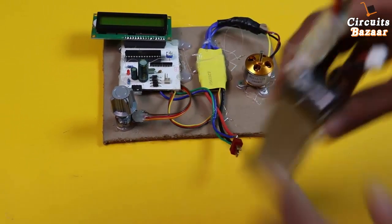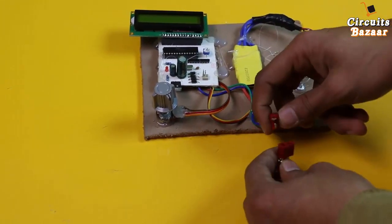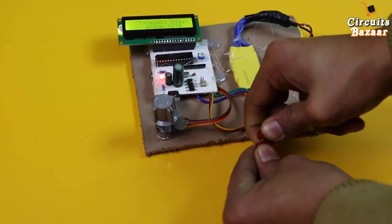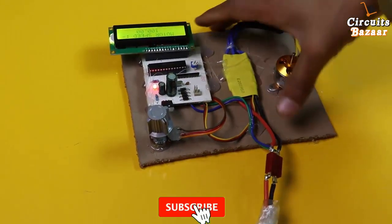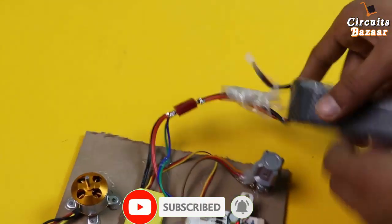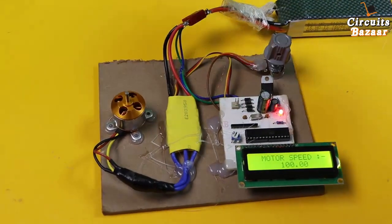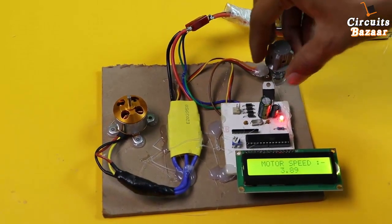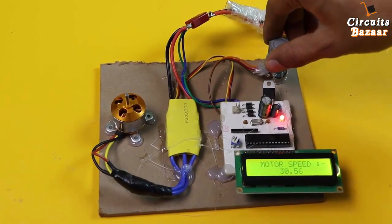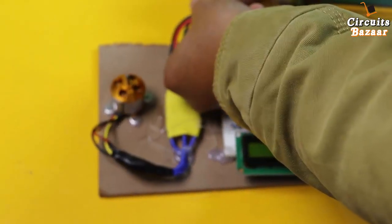Now let me show you how it's working. You need to be careful about the polarity. The message on the LCD shows speed control of BLDC motor. Let me rotate it this way.